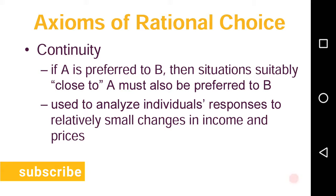This continuity axiom is used to analyze individuals' responses to relatively small changes in income and prices. Like if there is a particular amount that I have to pay for A, and if somehow my income marginally decreases and now I am not able to afford A, so earlier I was preferring A to B. If I get some option that is just close to A, not exactly A but close to A, and it is available and could be purchased with my new decreased income, I will go for that option that is close to A rather than going for B.